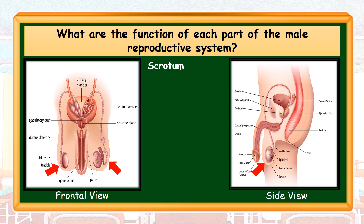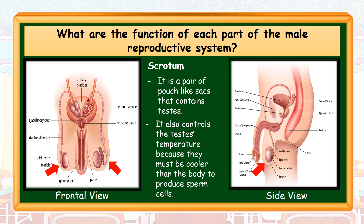Scrotum — it is a pair of pouch-like sacs that contains the testes. It also controls the testes' temperature because they must be cooler than the body to produce sperm cells.